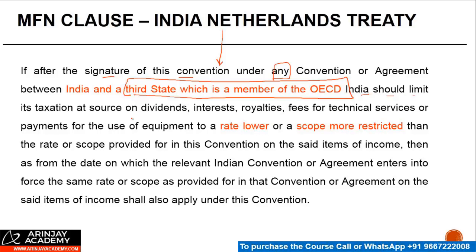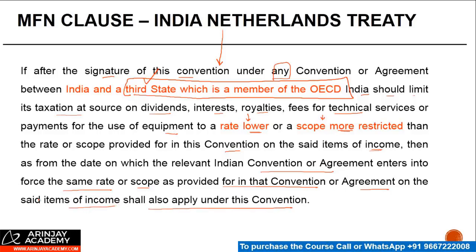Should India limit its taxation at source on dividend, interest, royalty, FTS, or payment for the use of equipment to a rate lower or a scope more restricted — in respect of any of these payments, if India enters into a treaty with a third state which is a member of the OECD where the rate of tax is lower or the scope of taxation is limited in India's favor — then the rate or scope provided for in this convention on the said item of income, as from the date on which the relevant Indian convention or agreement with the third state enters into force, the same rate or scope as provided for in that convention or agreement on the said item of income shall also apply under this convention.